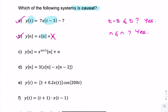Similarly, for the next question, we're not interested in this n and we're not interested in the power. We're interested in the argument for x. This has to be less than or equal to n, and if that holds for all values of n, then the system is causal.